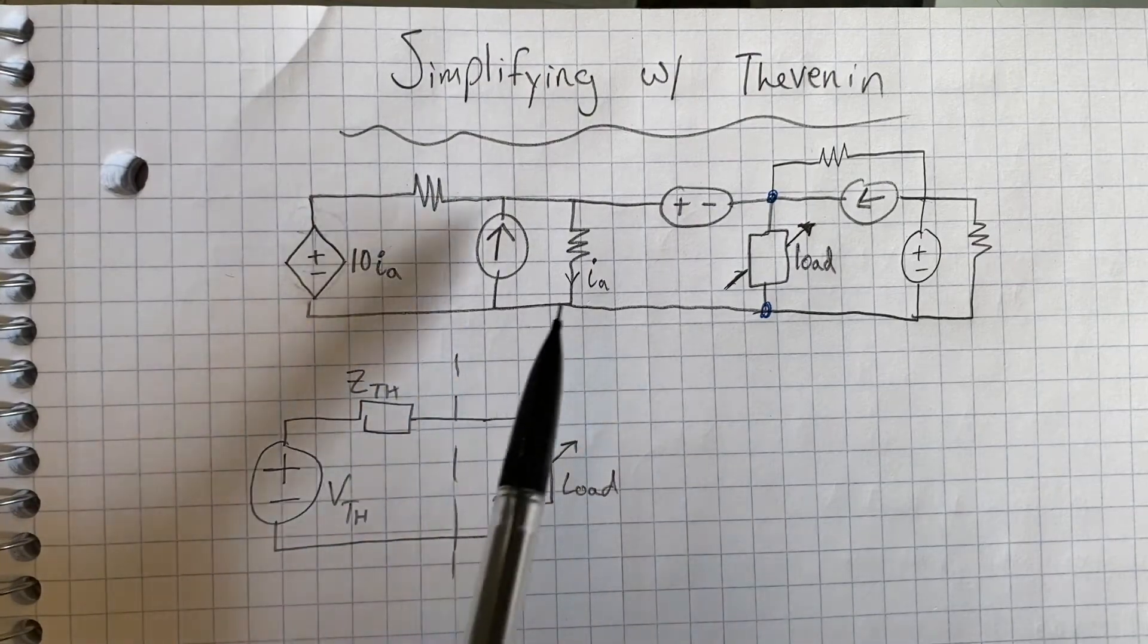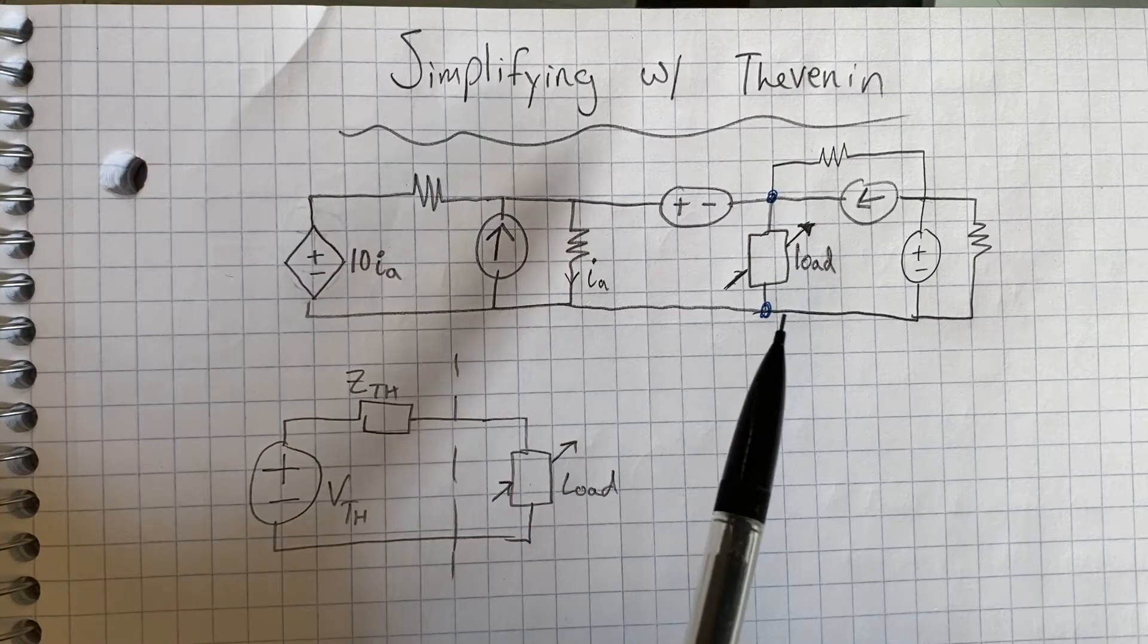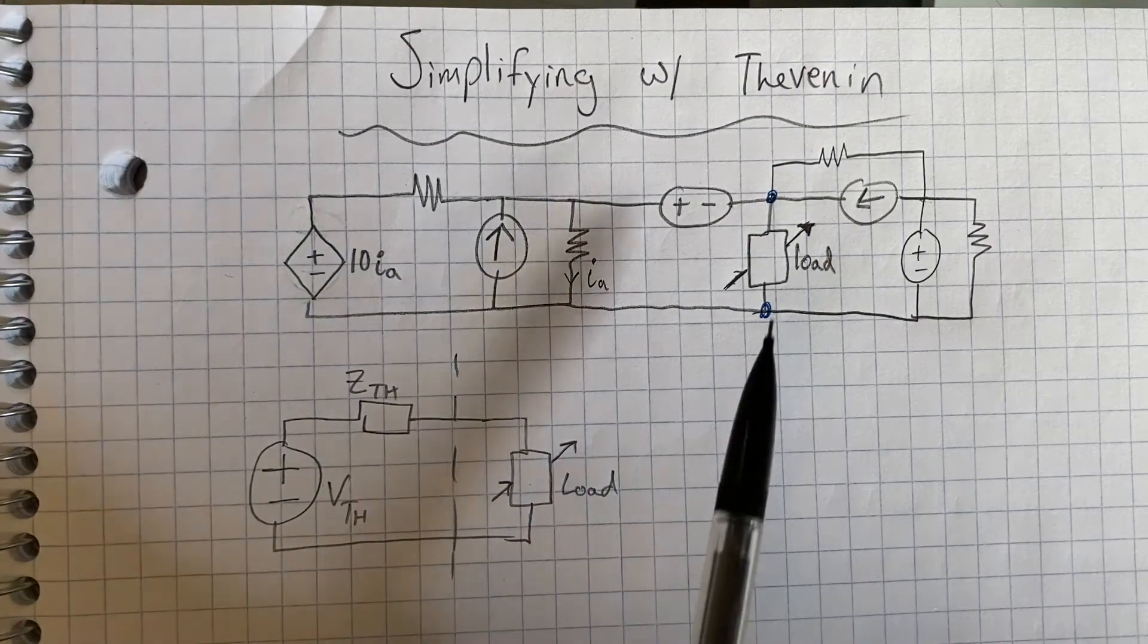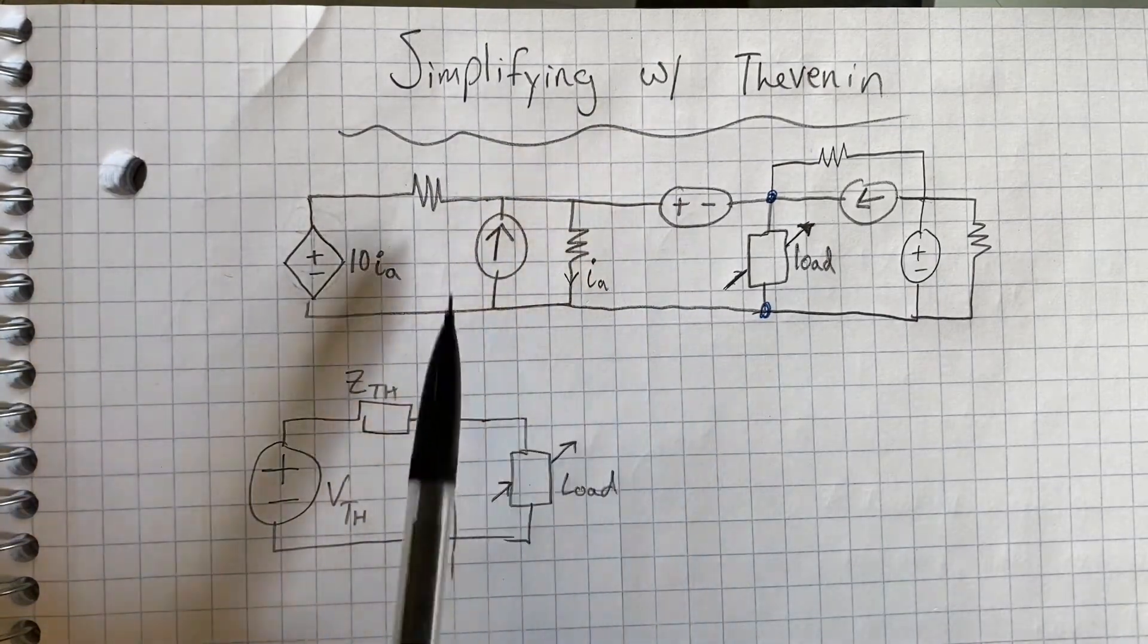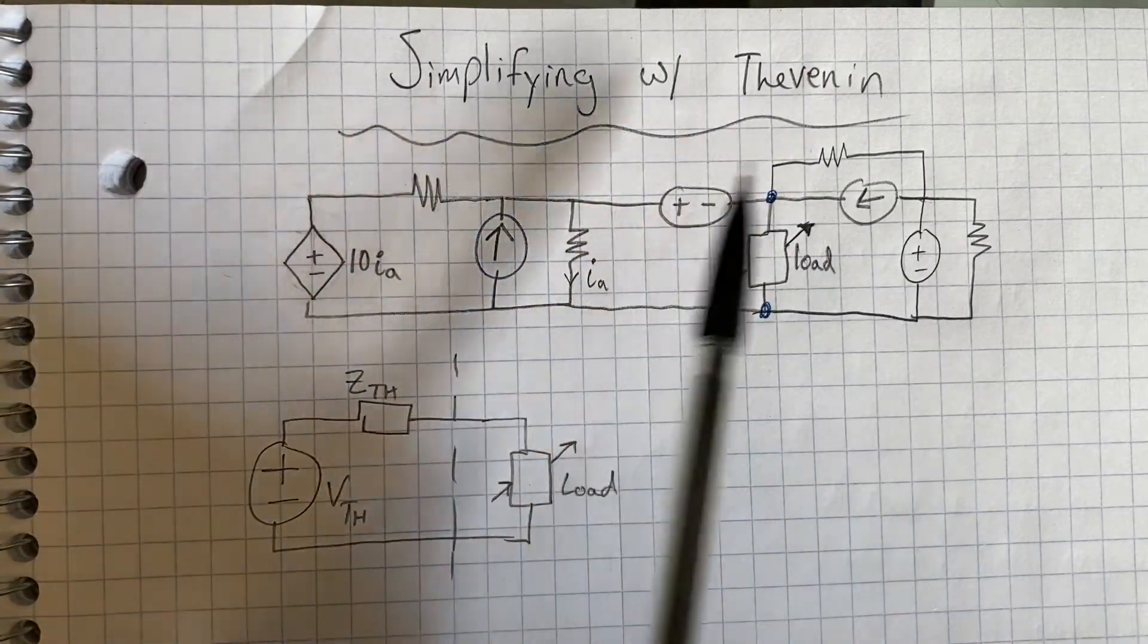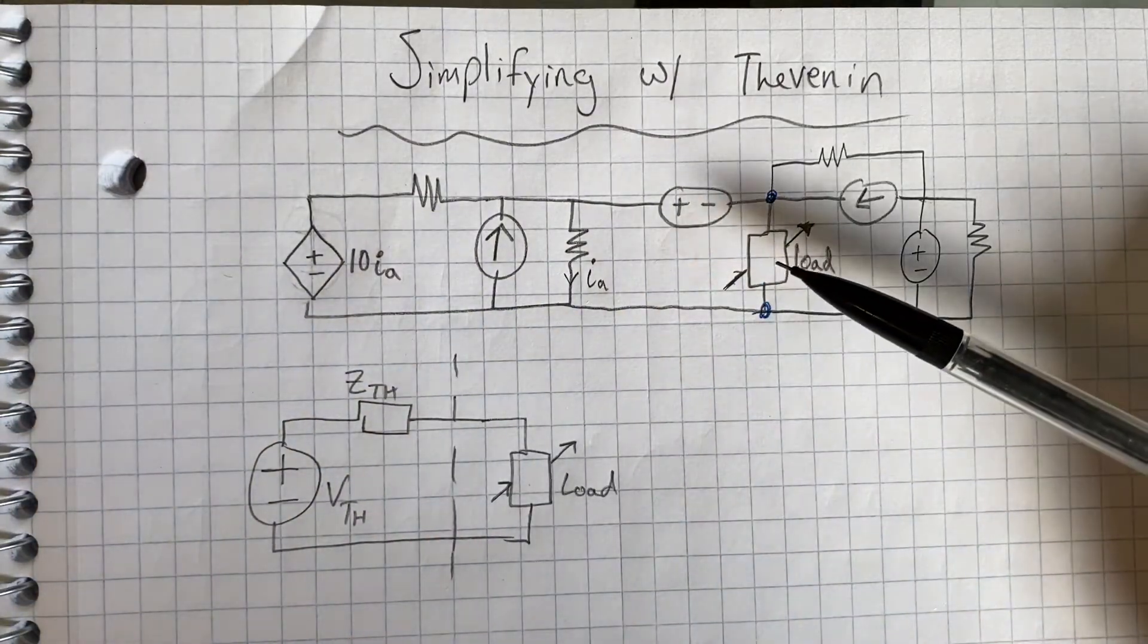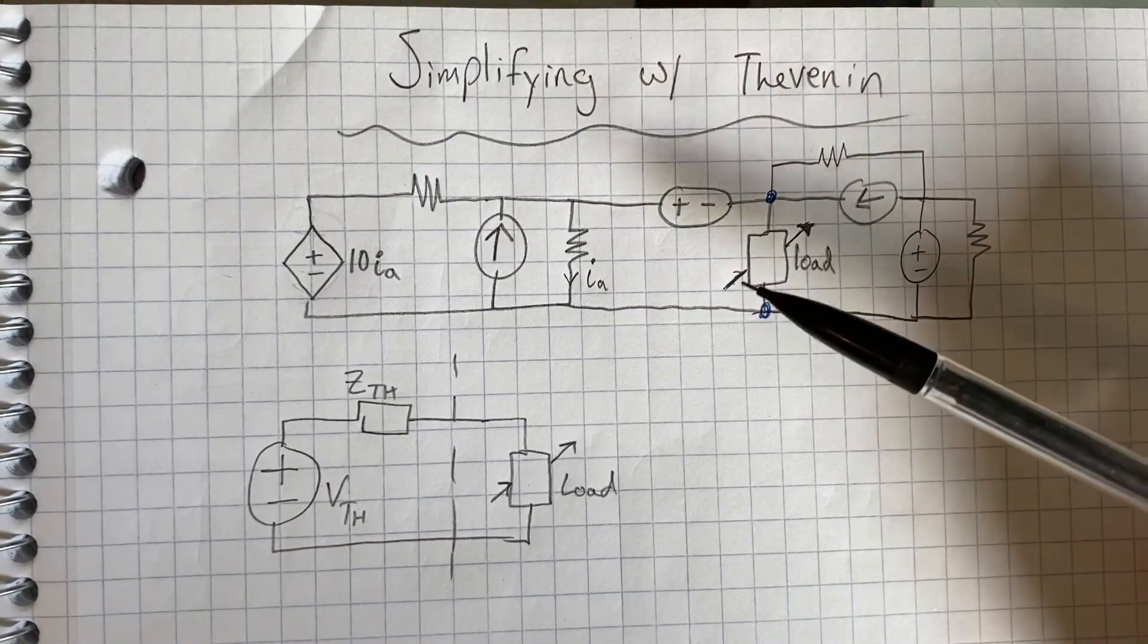We have independent sources, dependent sources, and whatnot. And our end goal is to change this load and observe the current through it. We don't really care about anything else in this whole big circuit. So it'd be a real pain if we change this load and had to recalculate all these nodes in the circuit just to get what we want.